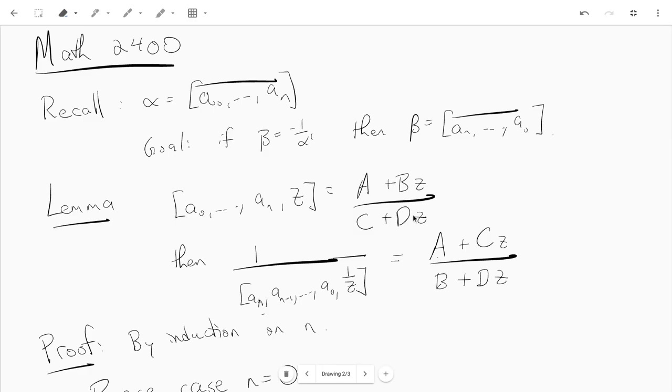So if you do that, now if you write out the reciprocal 1 over, reverse the digits, and put 1 over z as the last term, you get a plus cz over b plus dz. The key point being that b and c have been switched.